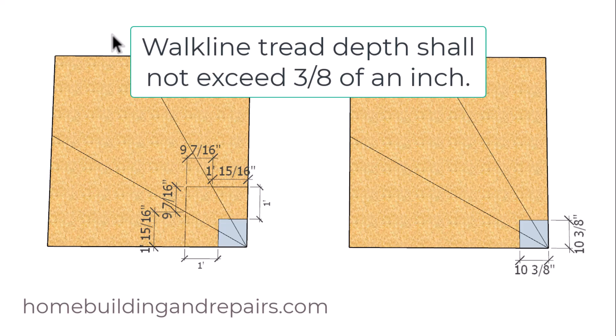And this could create a problem with another building code interpretation, suggesting that you can have more than a three-eighths of an inch variation between each one of these steps. So six inches isn't going to work.